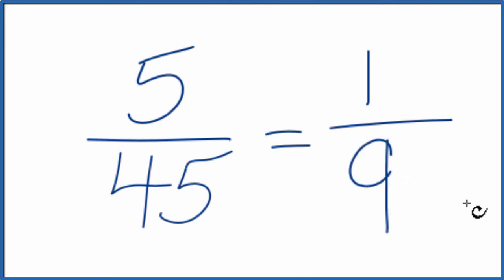So these are equivalent fractions. If you divided 5 by 45 and 1 by 9, you get the same number. The value is the same. It's just that we've simplified or reduced 5/45 down to 1/9. And we can't reduce this any further.